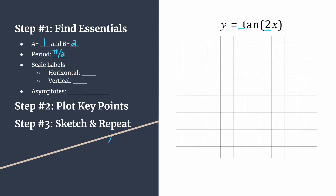Now let's get some scale labels. We set our horizontal scale by taking the period and dividing it into four pieces. This ensures all key points fall in line with our horizontal tick marks for a nice, clean graph. To divide pi over two by four, instead of dividing by four, try multiplying by one fourth. You'll see the scale for the horizontal axis is just pi over eight, so we label those tick marks counting by pi over eight.